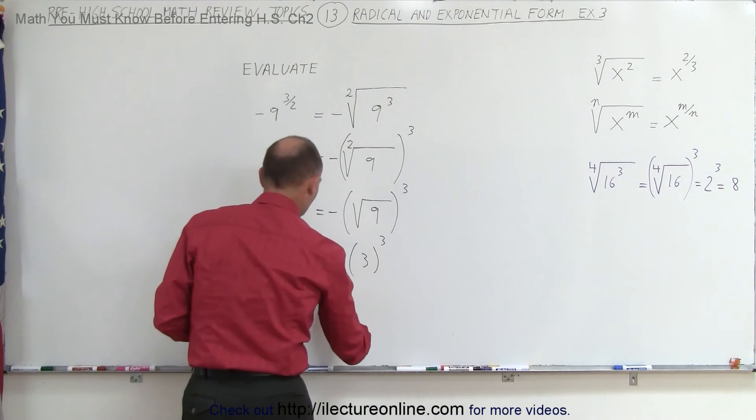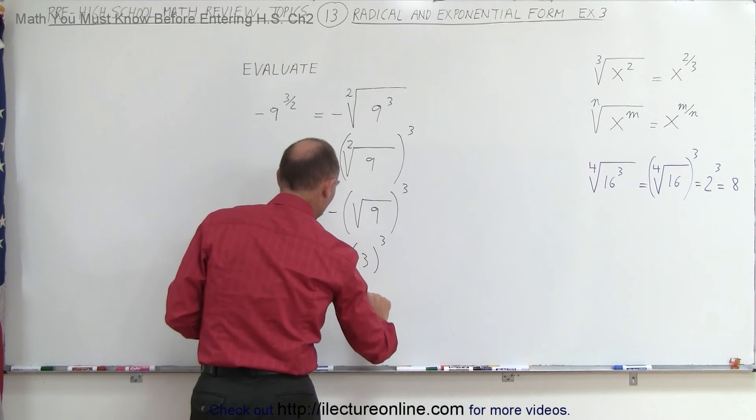And then of course 3 cubed is 27, so this becomes a negative 27.